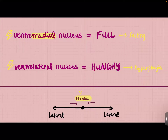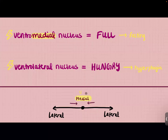The ventromedial nucleus is important for telling us that we're full — its function is to make us feel satiated so that we stop eating. Meanwhile, the ventrolateral nucleus is important to make us feel hungry so we can eat. A memory aid: 'medial' is like being in the middle, satisfied and moderate, so ventromedial equals satiety. If you're 'lateral' — at the extremes — you feel hungry and want to eat more, which is ventrolateral.